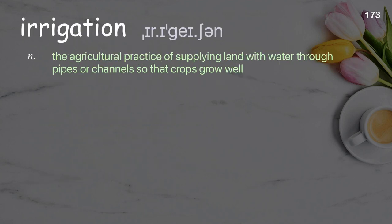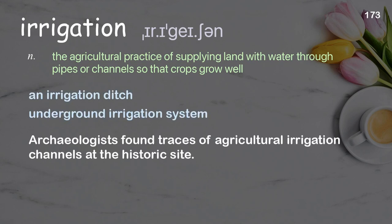Irrigation: the agricultural practice of supplying land with water through pipes or channels so that crops grow well. Examples: an irrigation ditch; underground irrigation system. Archaeologists found traces of agricultural irrigation channels at the historic site.